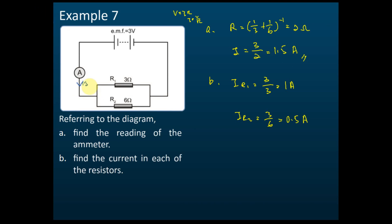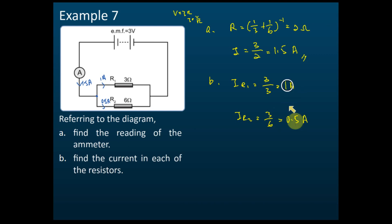So if the current here is 1.5 amperes, when it comes to this junction it will split: 1 ampere goes up and 0.5 amperes goes down. But when you add these two together, they must equal 1.5 amperes, so you can use this to check your answer. Alternatively, you can find the two branch currents first and add them together to get the ammeter reading.